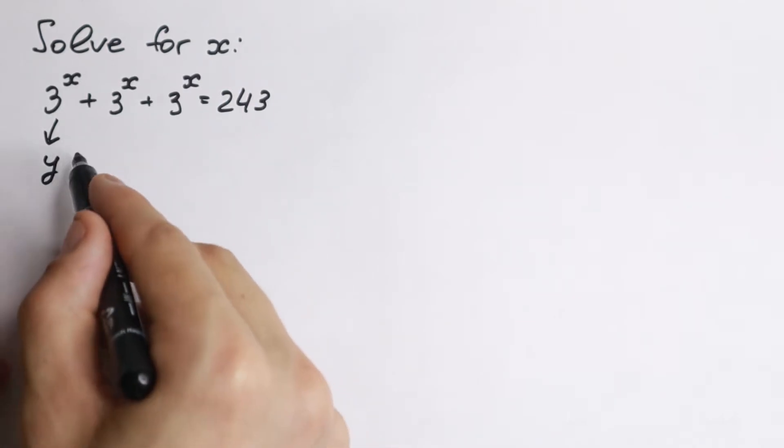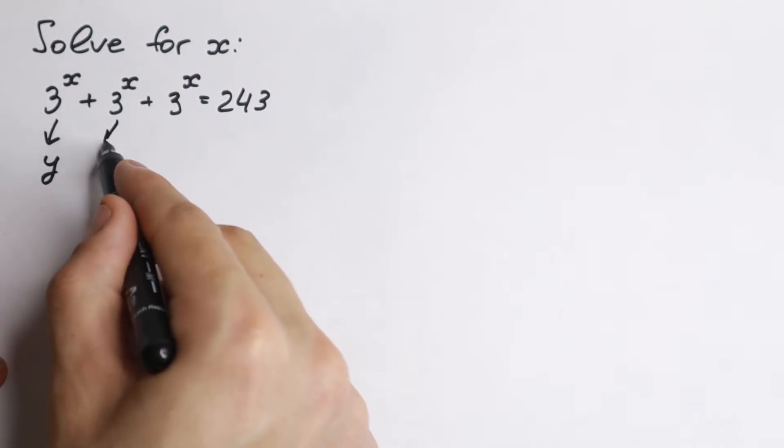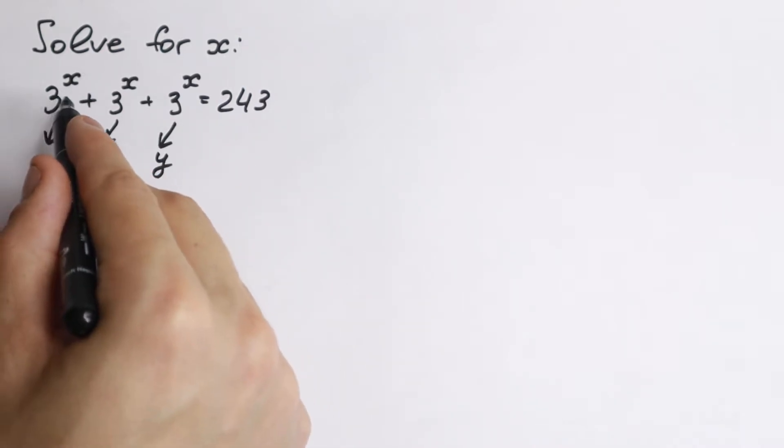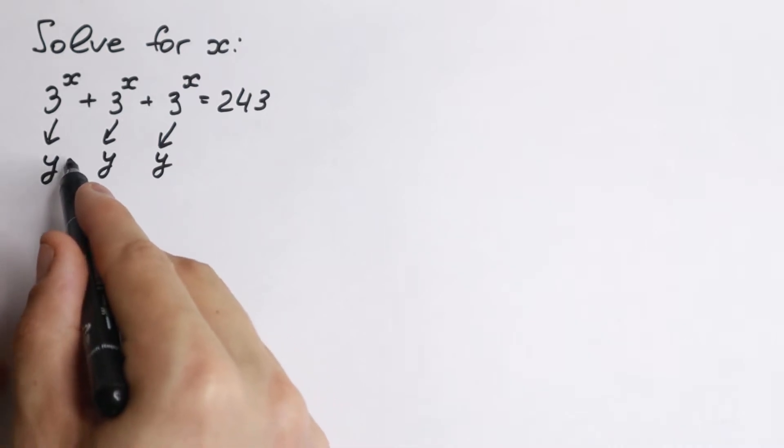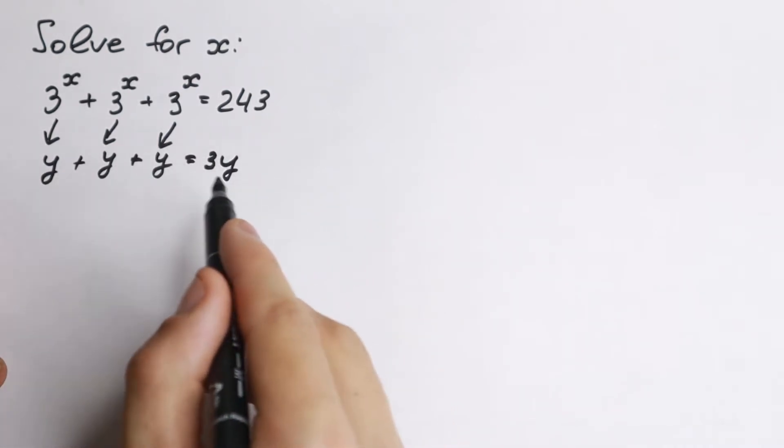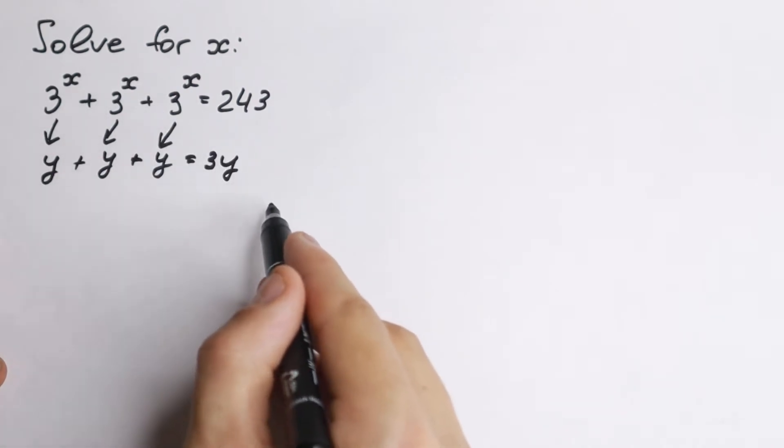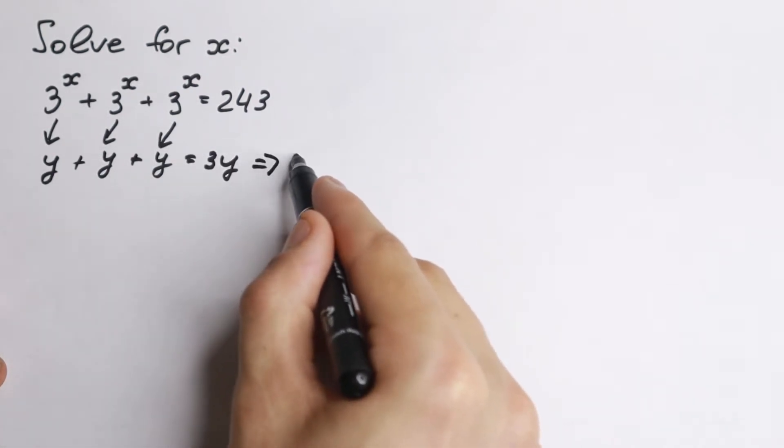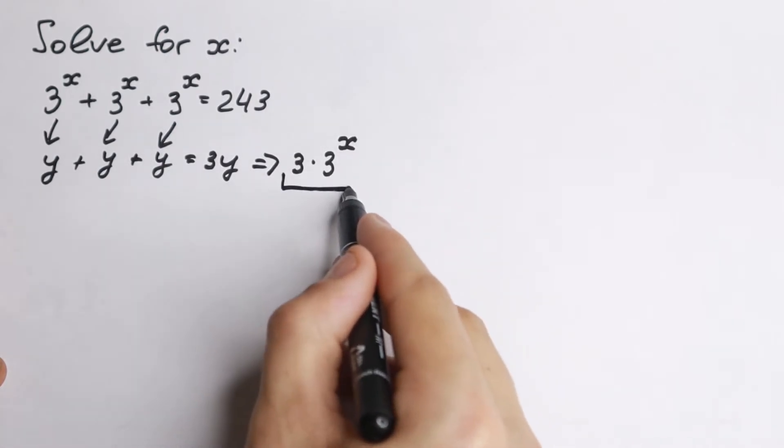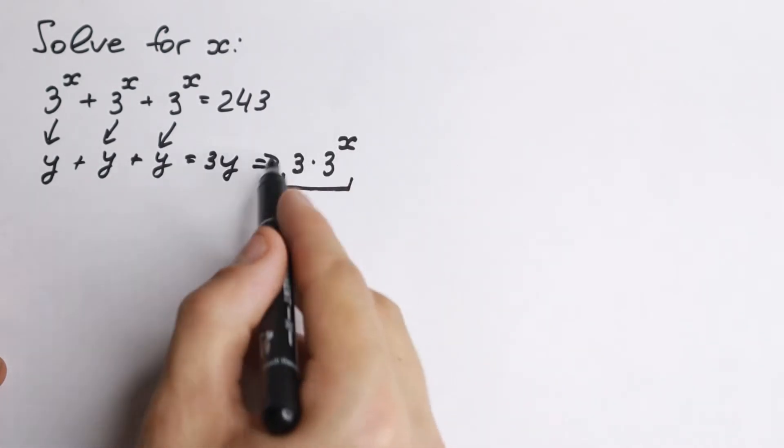So as a result we have y plus y plus y. I write this for those who don't know about the sum of these elements. So y plus y plus y equals 3y. As a result, y in our case is 3^x. So from here we will have 3 times 3^x. This is maybe the main difficulty in all questions so I hope you understand this moment.